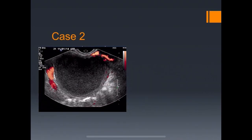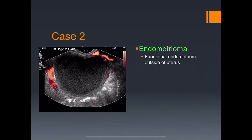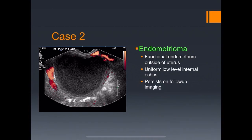Case two: as opposed to the prior, this cyst has low-level echoes. This is typical of an endometrioma — functional endometrium outside of the uterus with uniform low-level internal echoes. It persists on follow-up imaging unlike a hemorrhagic cyst, 50% are bilateral, and it can lead to ovarian torsion.